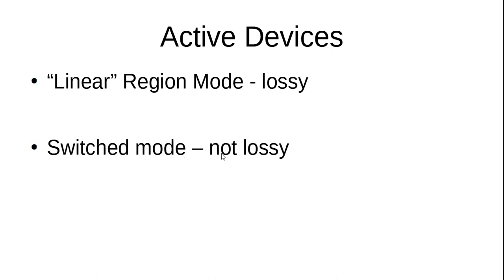Switch mode means that for the BJT, I'm operating either in the cutoff region or in the saturation region. Either I'm getting maximum current flowing with a very small saturation voltage, or I'm getting no current at all. It's either fully on or off — not anywhere in between. In between is that active region for a BJT. This is similar to what you see for a power amplifier — if I want to build a power amplifier, I want class B, which means either saturation or cutoff, not the active region, because the active region is lossy.